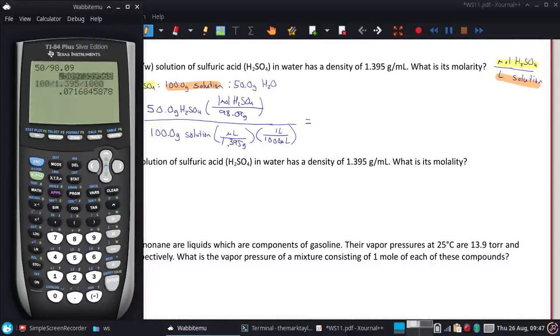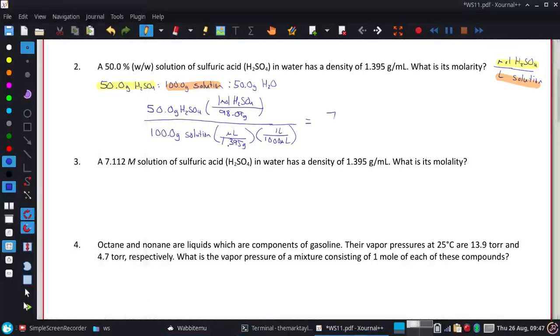To get the actual molarity, I divide the first value by the second and get 7.1. From the significant figures in 50.0, I only have three, so this should be 7.11 molar.